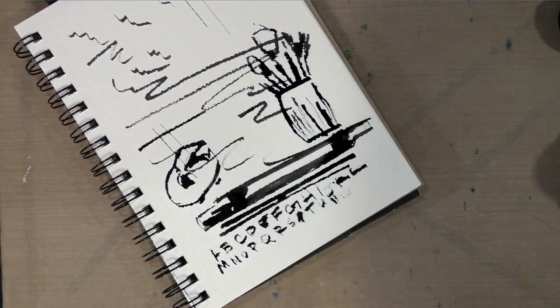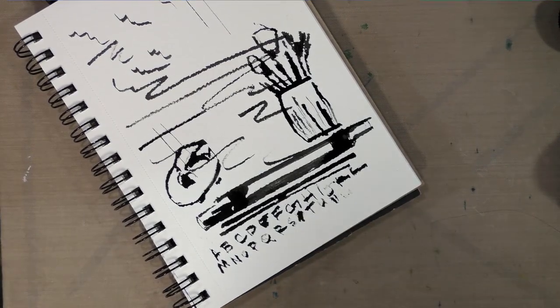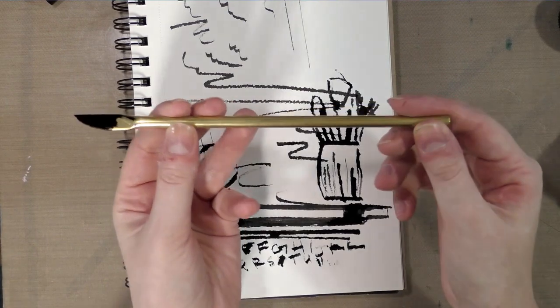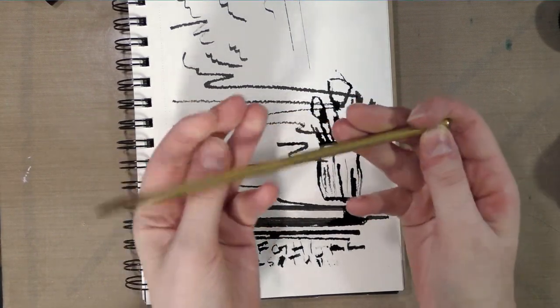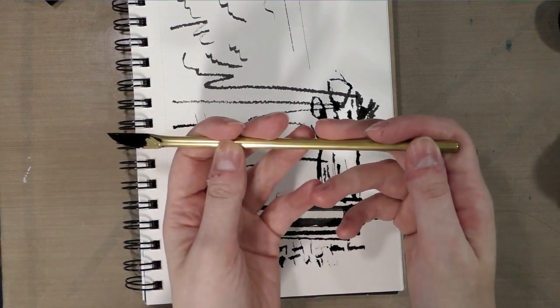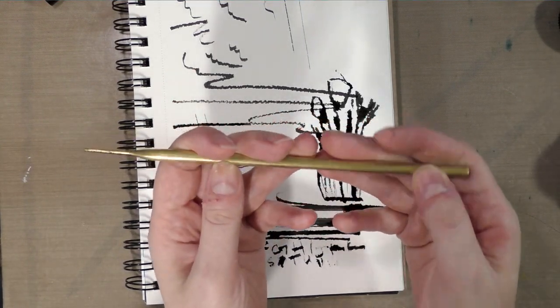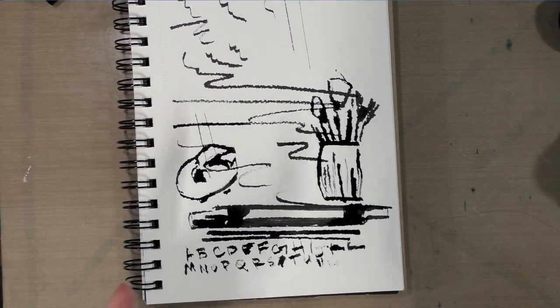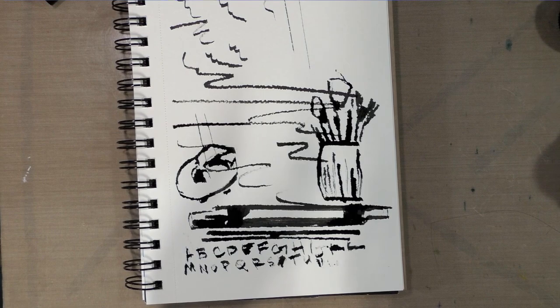I almost could get through the whole alphabet with one dip which is pretty impressive as well. So that is the folded brass dip pen made by Dan Barry, B-E-R-R-Y at thingsbydan on Twitter. You guys can find a link to where you can get your own if you so desire in the description below.